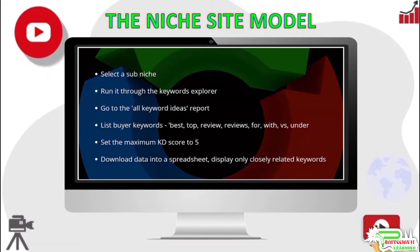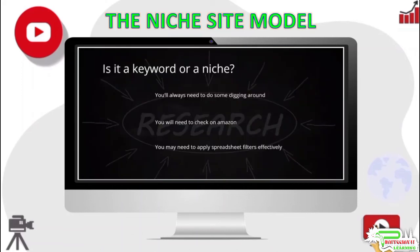Here is a limitation: deciding whether a keyword could be a niche or not is not always a straightforward process. You cannot have a cookie-cutter approach that will always work. Unless you are familiar with the niche, you will need to do some digging around to get a clear picture. You might need to run a search on Amazon, see the categories listed, and look at keywords that are selling — only then will you know whether something is a niche or just a keyword. Thanks for watching, and keep supporting my channel for more informational videos.